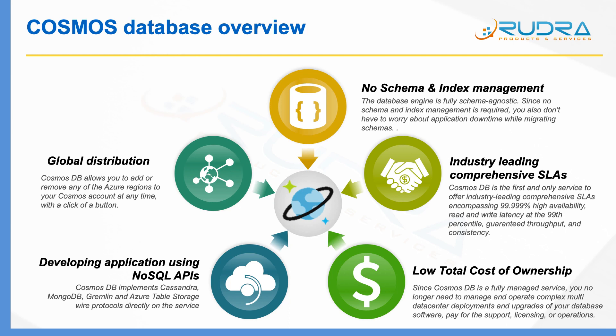The next thing is developing applications using NoSQL APIs. If you have a NoSQL data store such as Cassandra, MongoDB, and others, when you are migrating to Azure, you don't need to change the entire application to consume new APIs. Because Cosmos DB implements NoSQL APIs for MongoDB, Cassandra, and others, you can easily migrate your existing database into Cosmos DB with minimal changes to your application.